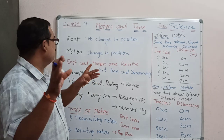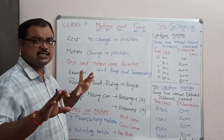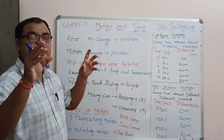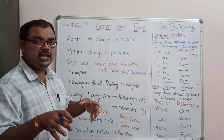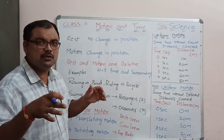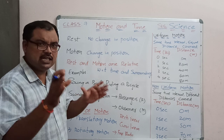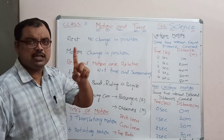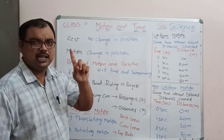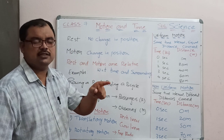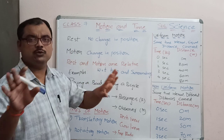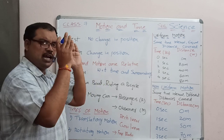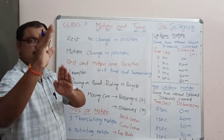Now these two words — rest and motion — are called the states of being of a substance. Being in the sense, how they are: are they at rest or are they in motion? Only one state is possible. If an object is at rest, it is not moving. If it is moving, we cannot call it as rest. So either rest or motion.